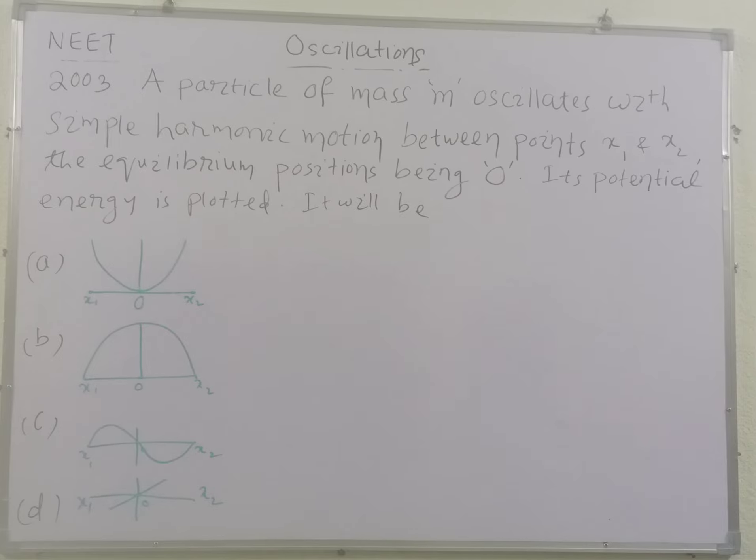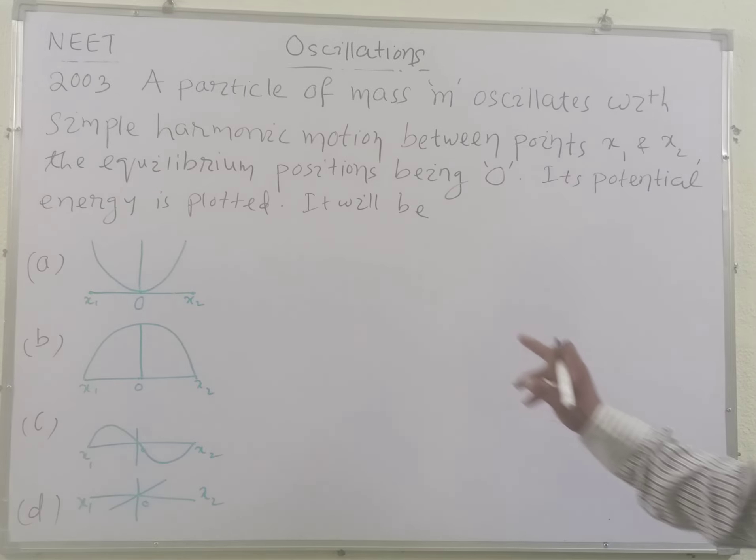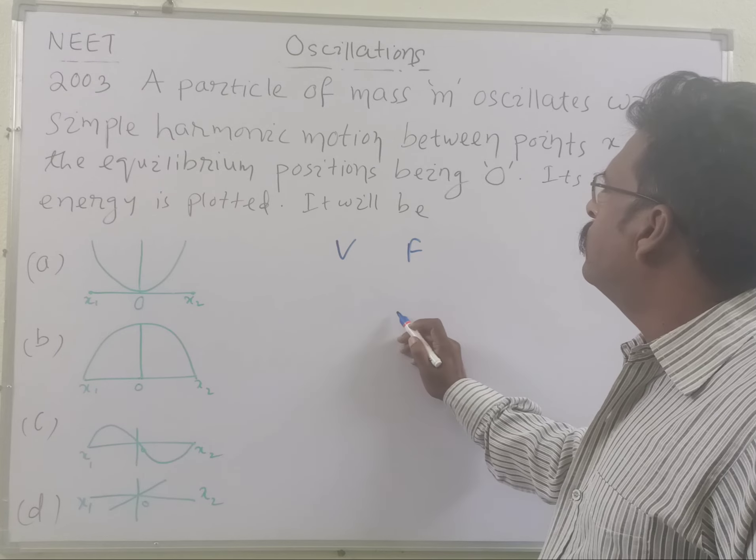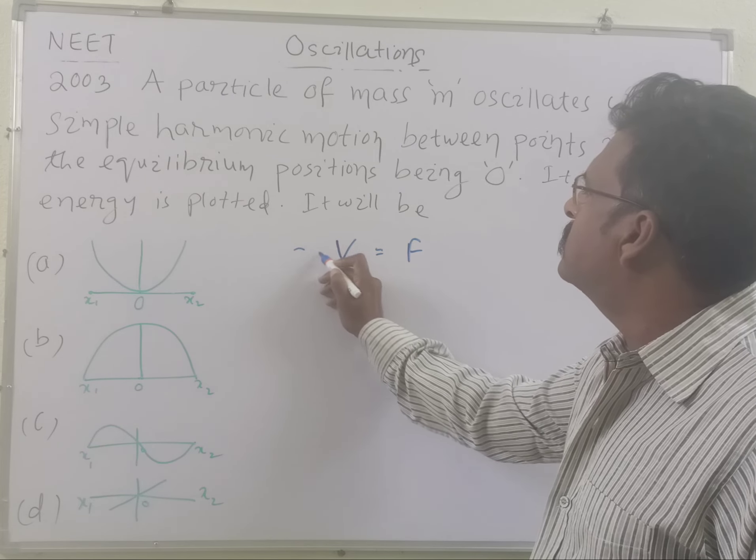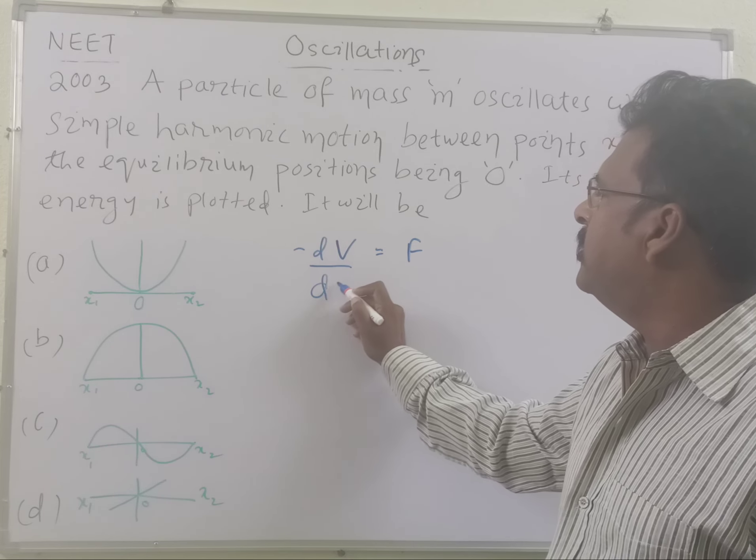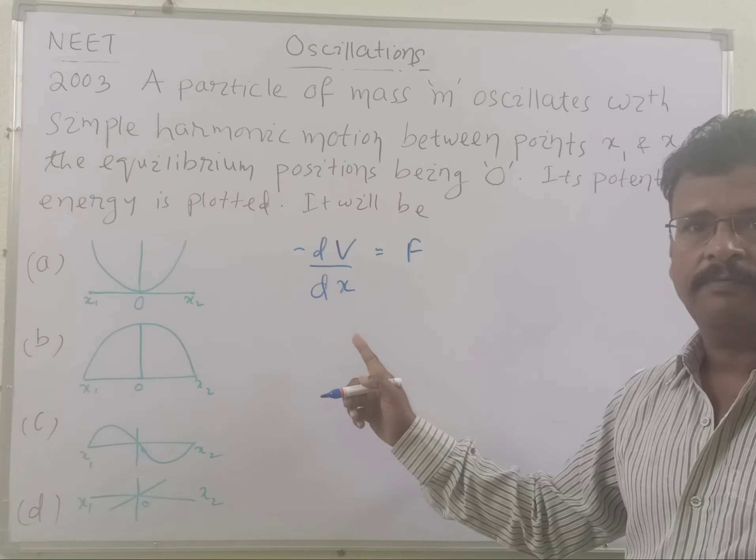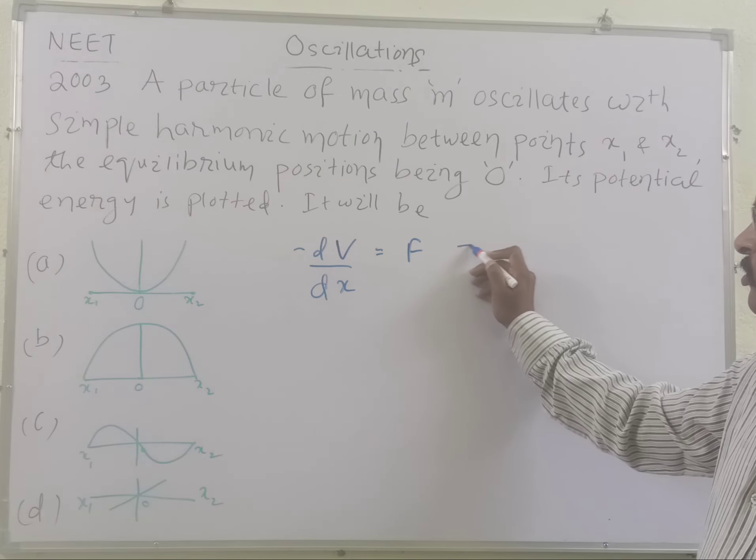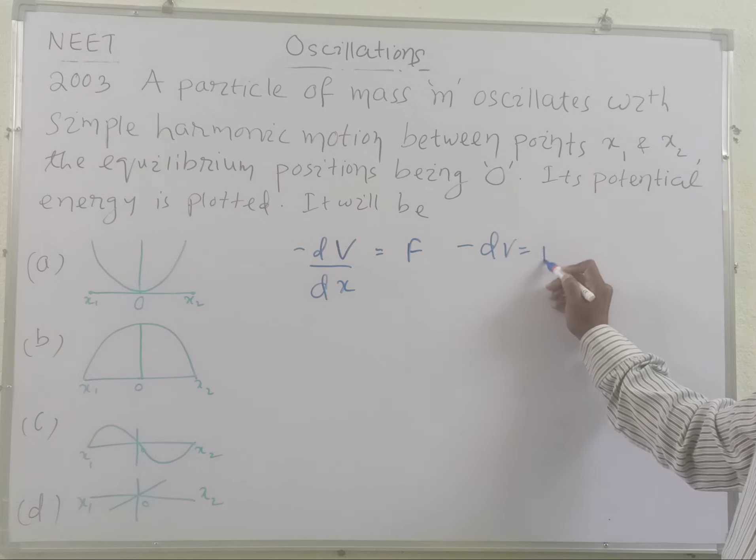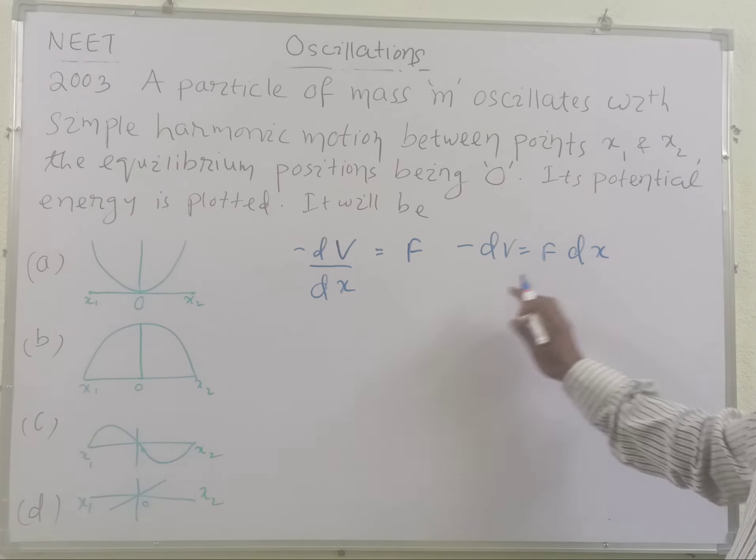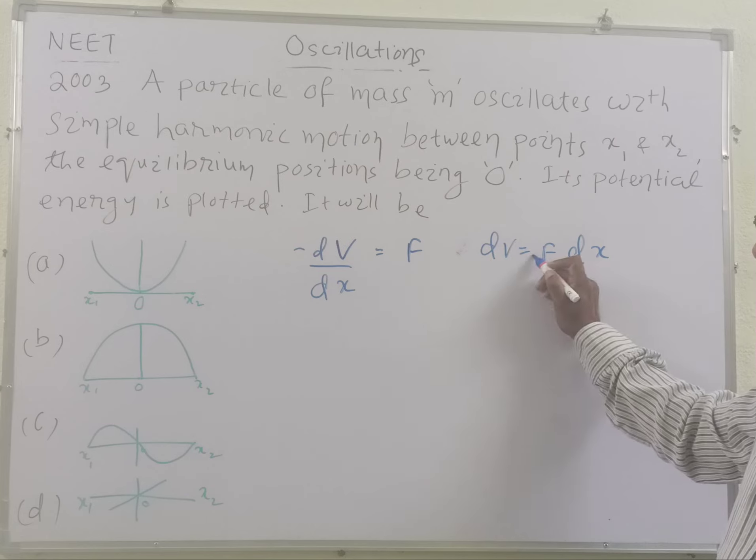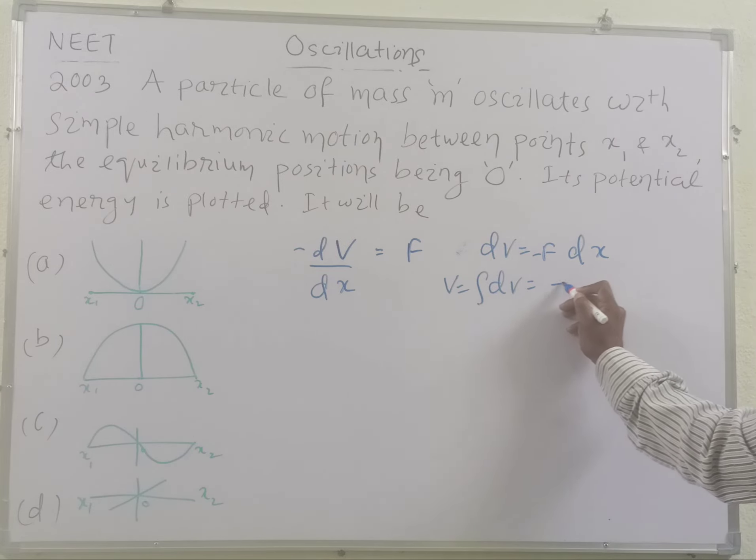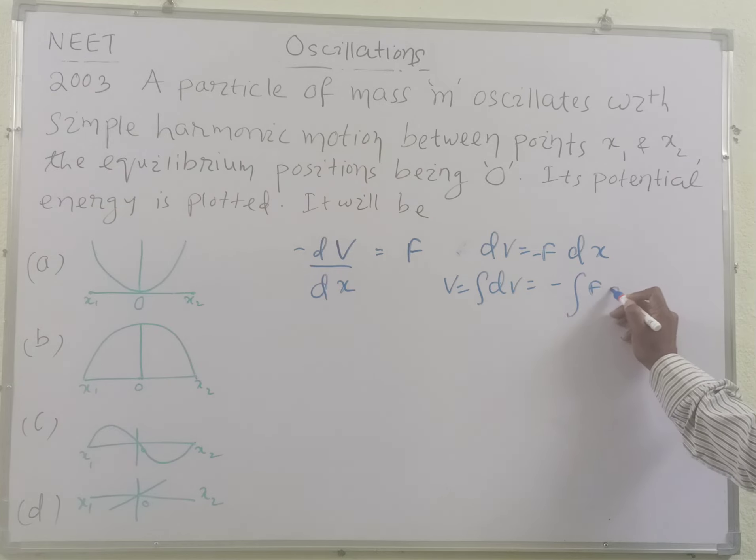What is the relationship between potential energy V and force F? You know F is equal to minus dV by dx. If the body is executing motion along the X-axis, we may write minus dV equals F dx, or dV equals minus F dx, or V equals integration of dV equals minus integration of F dx.